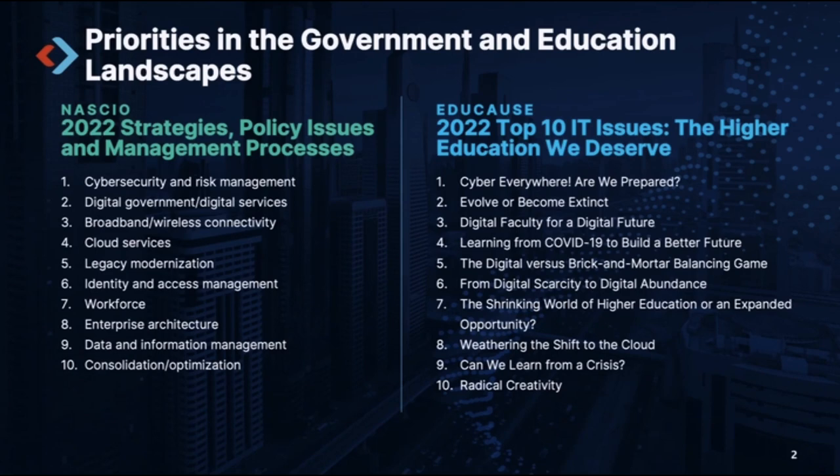Let's start with NACIO. They recently released their 2022 Strategies, Policy Issues, and Management Processes list — things that are going to be important to state CIOs in the coming months. As you can see on your screen, there are 10 things that are critical. Number one should not be a surprise: cybersecurity and risk management. You can't turn on a TV or a screen anywhere today without hearing about the latest ransomware attack.